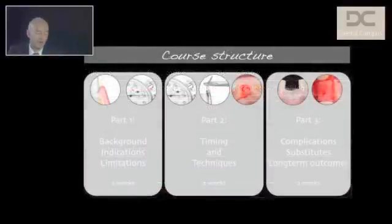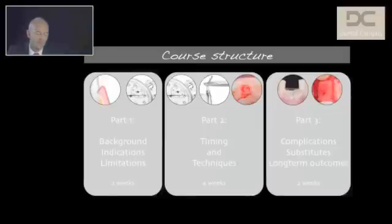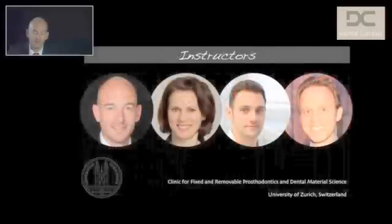The course structure has three parts ranging from two to four weeks each, with an overall time period of about eight weeks to complete all course content. Part one focuses on background, indications for soft tissue grafting procedures, and limitations of the available techniques. Part two focuses on timing and available techniques. Part three covers complications, soft tissue substitutes, and long-term outcomes. After each part there will be an online assessment.